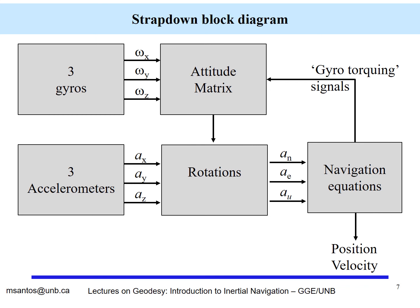This is a very interesting block diagram of a strap-down system. We have three gyros and three accelerometers attached to the body of the vehicle. Each one provides its quantities with respect to the body-fixed coordinate system. The accelerometers give accelerations with respect to x, y, and z. The gyros give us the angular quantities that are used to form the attitude matrix.